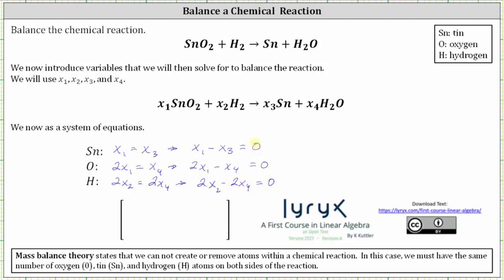We'll set up an augmented matrix and then write it in reduced row echelon form. Because we have four variables in three equations, we will have a three by five augmented matrix. The first column will be the coefficients of x sub one, the second column the coefficients of x sub two, the third column the coefficients of x sub three, the fourth column the coefficients of x sub four, and the fifth column will be the constants, which in this case will all be zero.